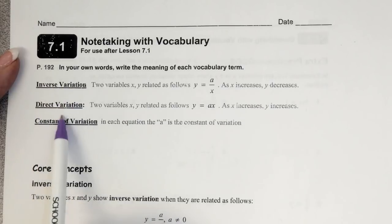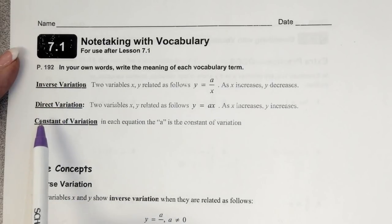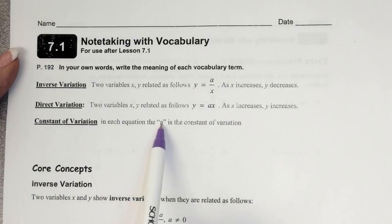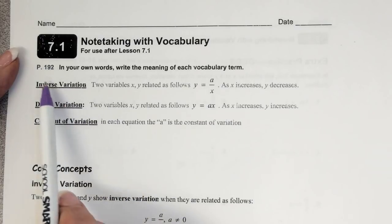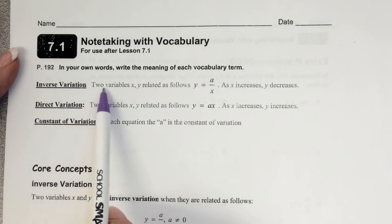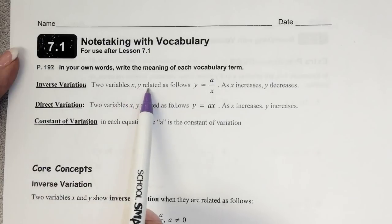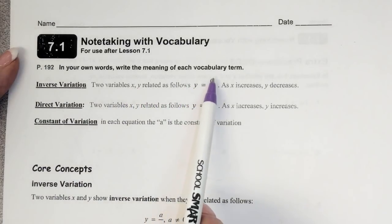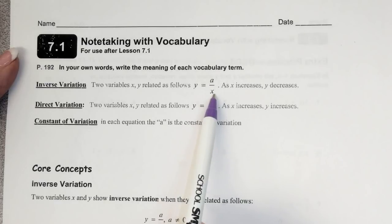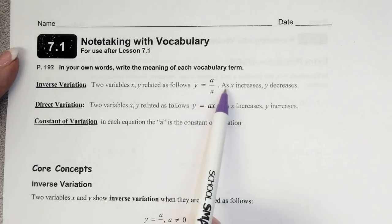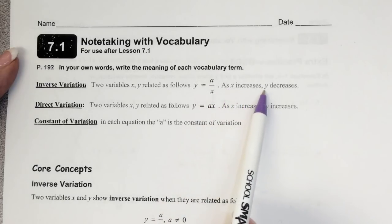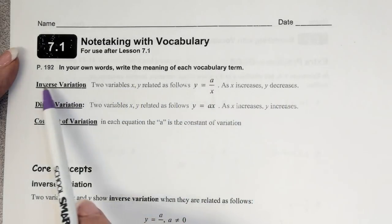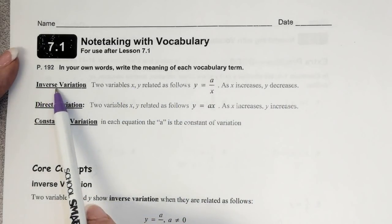When we're talking about these two types of variation, we're always going to have a constant of variation, and this constant is going to be called A. When we have inverse variation, we're going to have two variables, x and y, that are related in this way: y equals that constant divided by x. So as x increases, y will always decrease. That's one way to check if it might be inverse variation.